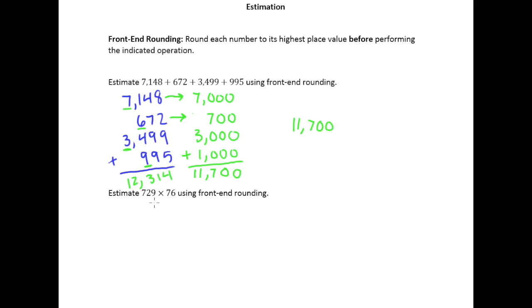Let's try one with multiplication. So we would set up 729 times 76, and this is what we would have if we were just multiplying the two numbers directly, but we're going to estimate using the front-end rounding. This is my highest value in 729. This is a 2, so I'll leave that as a 7 and zero everything else out. This is 700.